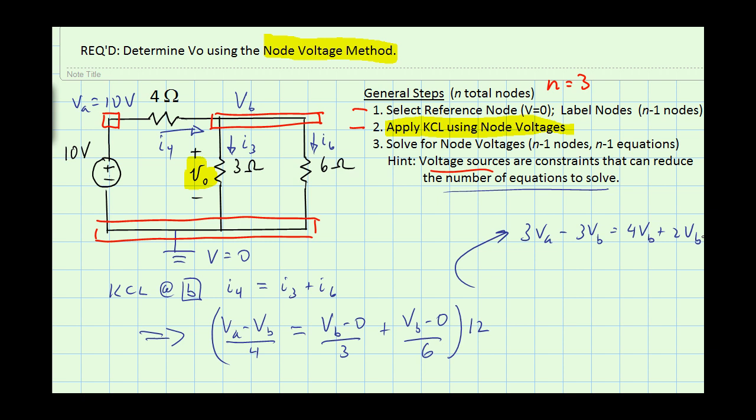Take VB and move VB to the same side and substitute the 10 volts in for VA. And we have 30 is equal to 9 VB, or VB is equal to 30 over 9 volts, or 10 thirds volts, or VB is equal to 3.33 volts.